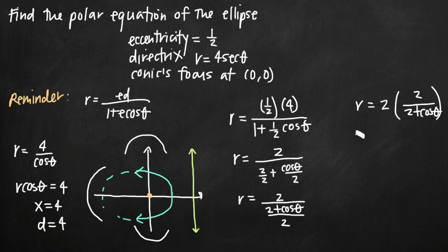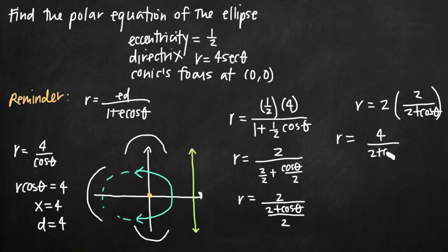Distributing the 2, we get r = 4/(2 + cos(θ)). This is the polar equation of the ellipse with the given eccentricity, directrix, and focus.